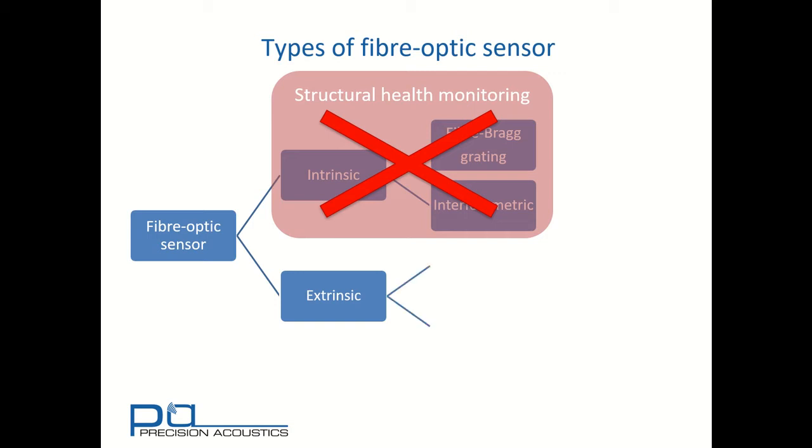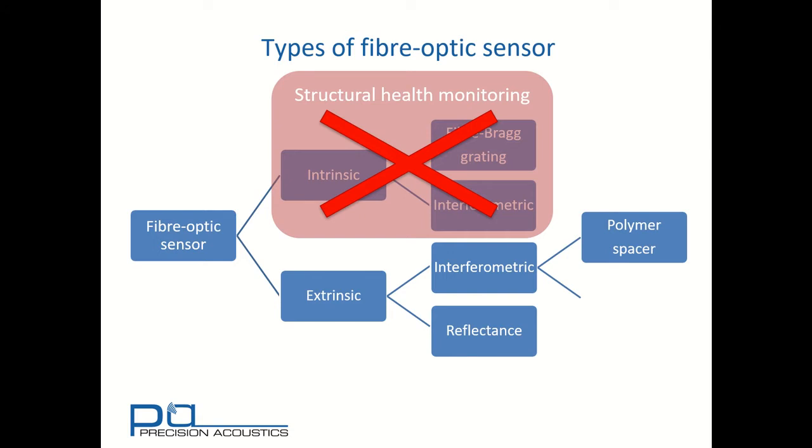Extrinsic sensors similarly split into two categories: interferometric sensors and reflectance-based sensors. And you find that interferometric sensors could have a polymer spacer or hard dielectric spacer, and potentially hard dielectric mirrors.